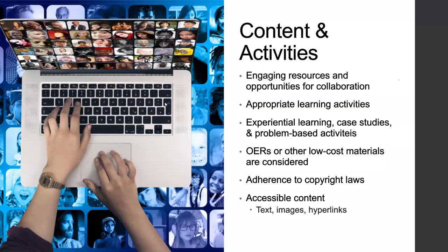The next standard is content and activities — the meat of your course. This is where students engage with learning material, learn from chapter materials and external resources. The OSCAR rubric walks you through the importance of considering OERs or other low-cost materials, the importance of adhering to copyright laws, and the accessibility of content — especially when it comes to texts, images, and hyperlinks.